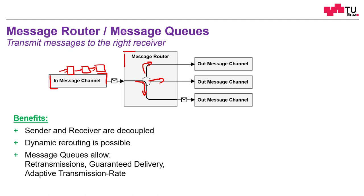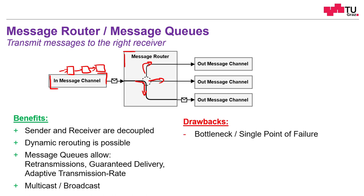Message queues in general allow retransmission, guaranteed delivery, and adaptive transmission rate. If output queues run full, we can slow down the input rate; if input channels get crowded, we can speed up sending on the output channels. We can buffer and aggregate messages. Multicast and broadcast are also possible — one single input message can be split and duplicated to multiple output channels.